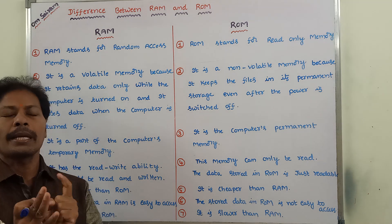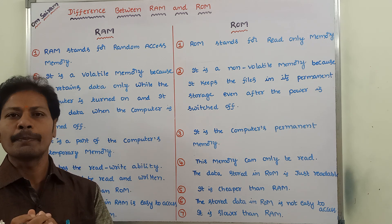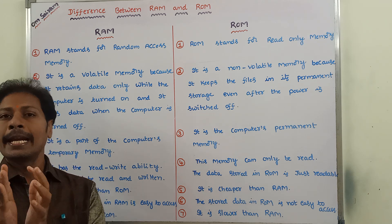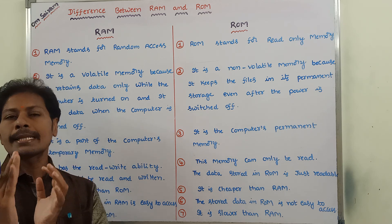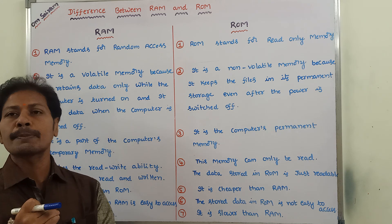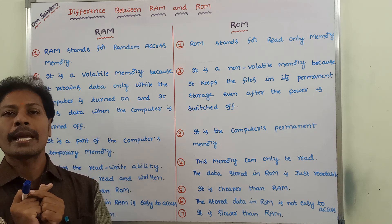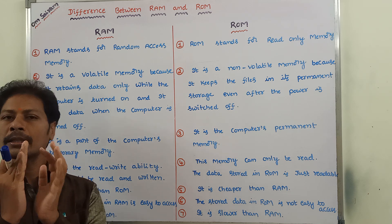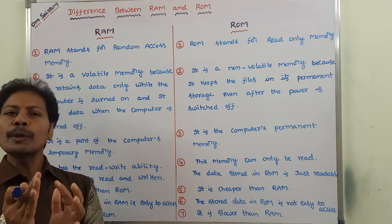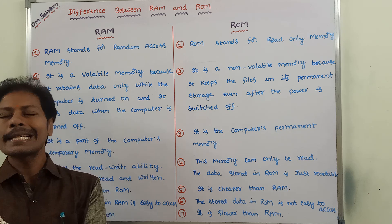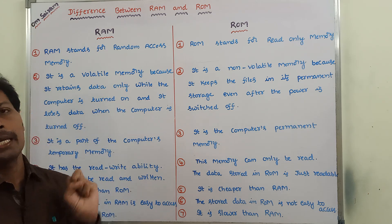Second point: RAM is a Volatile Memory. It retains its data when the computer's power is turned on, and it loses its data when the computer's power is turned off. Hence, we can say that RAM is a Volatile Memory.